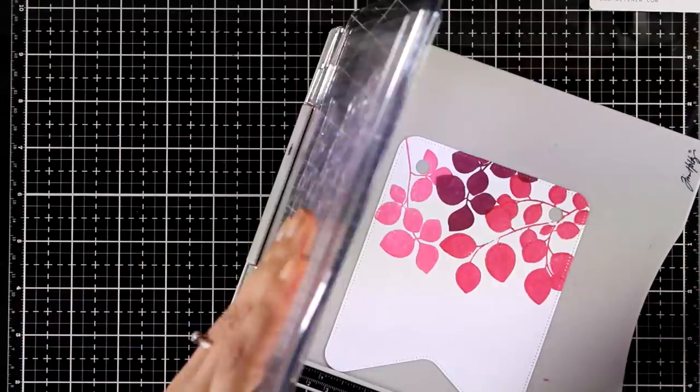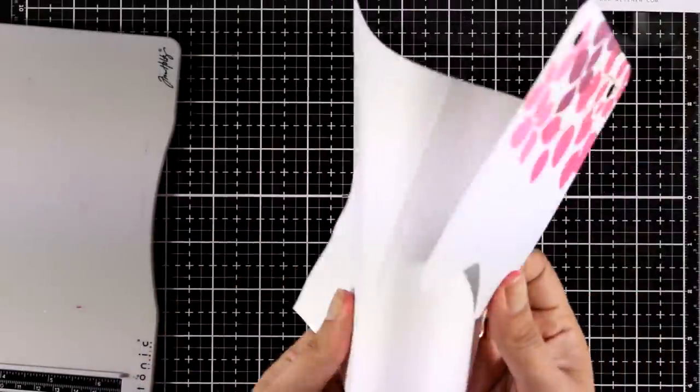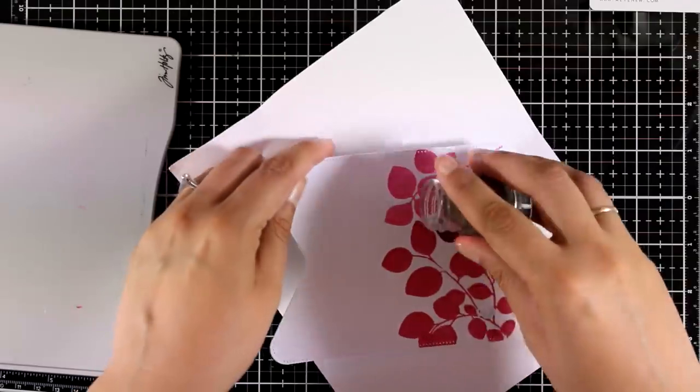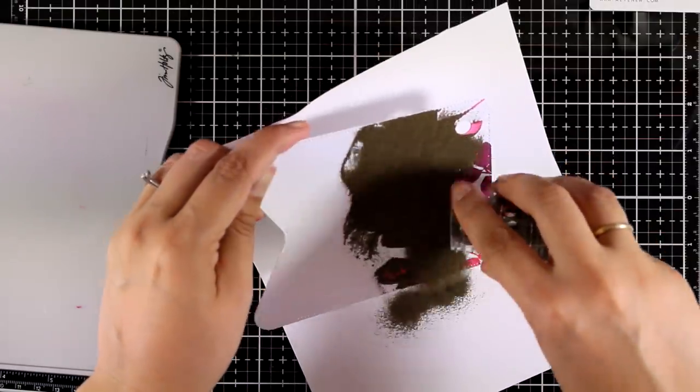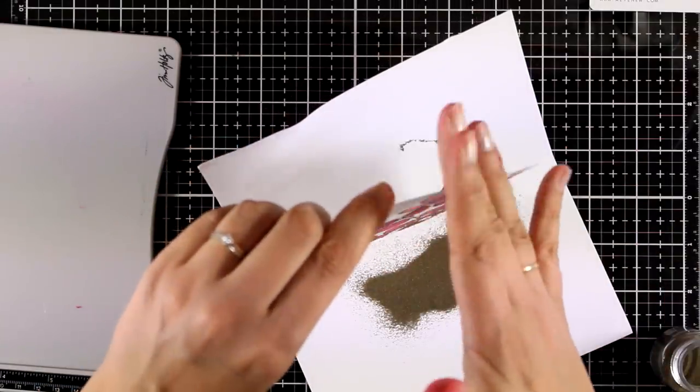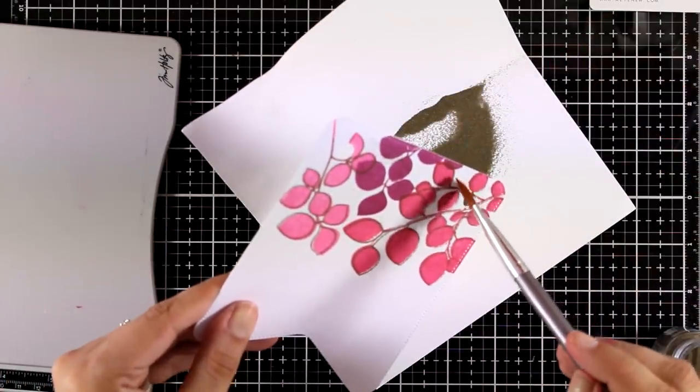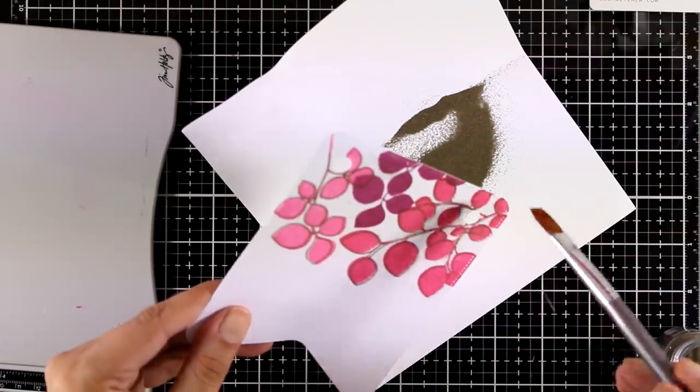I'm stamping everything with Versamark ink and then I'm going to apply my gold embossing powder. Now before you apply your embossing powder, always make sure that the ink is totally dry. I forgot to do that on this panel and that's why I have to play a little bit with a brush to clean up some areas.